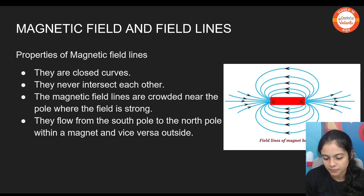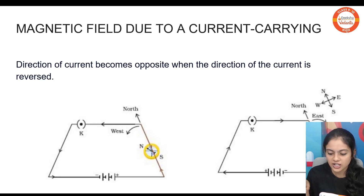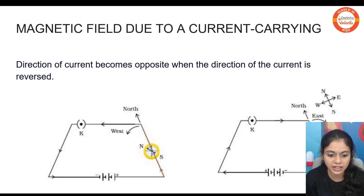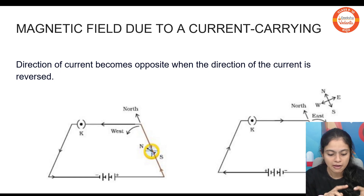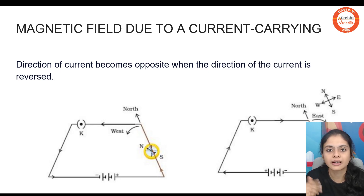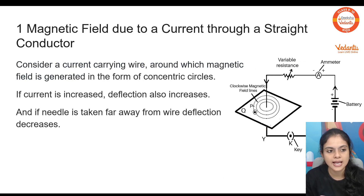Magnetic field due to a current-carrying conductor: if a conductor is carrying current, we can see the production of a magnetic field by keeping a compass near it. If I change the direction of current, the deflection of the compass also changes. If I increase the strength of the current in the conductor, the magnetic deflection also increases. So we can see that magnetic field and current are directly proportional to each other.